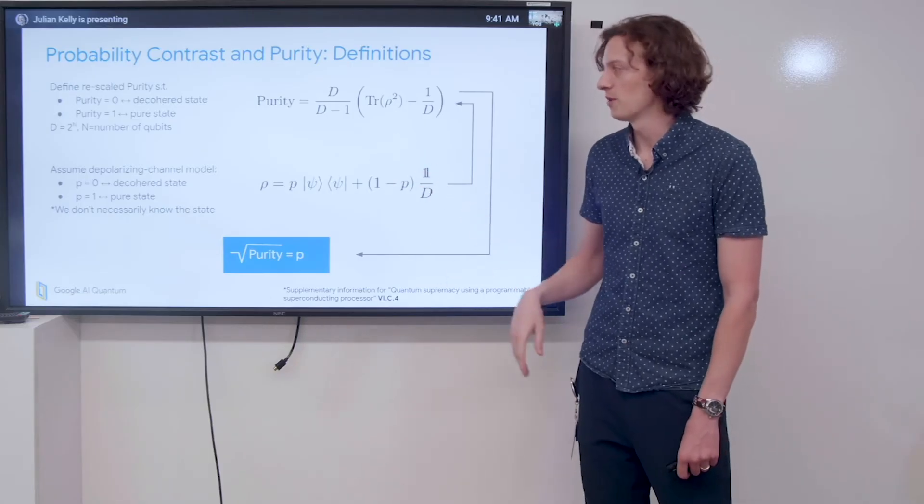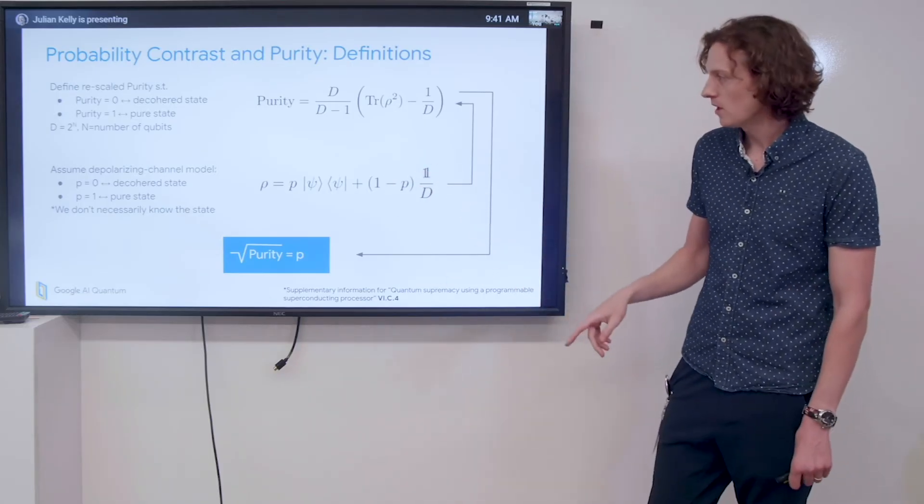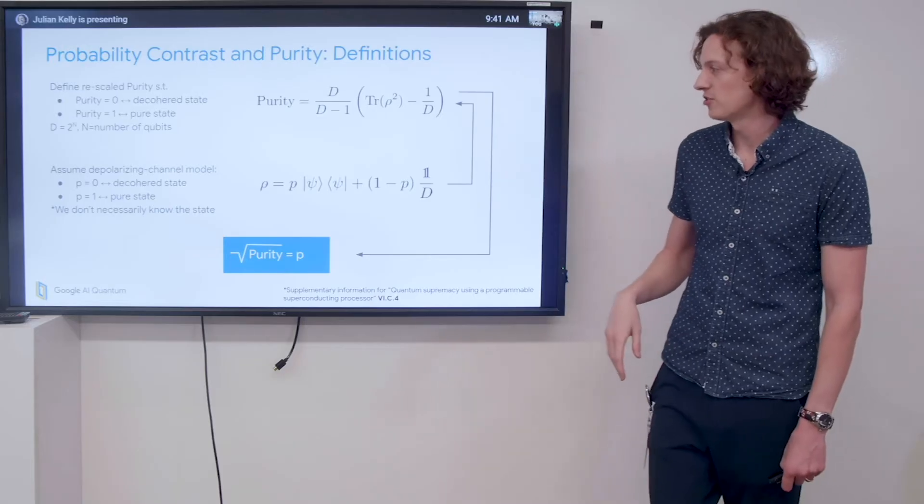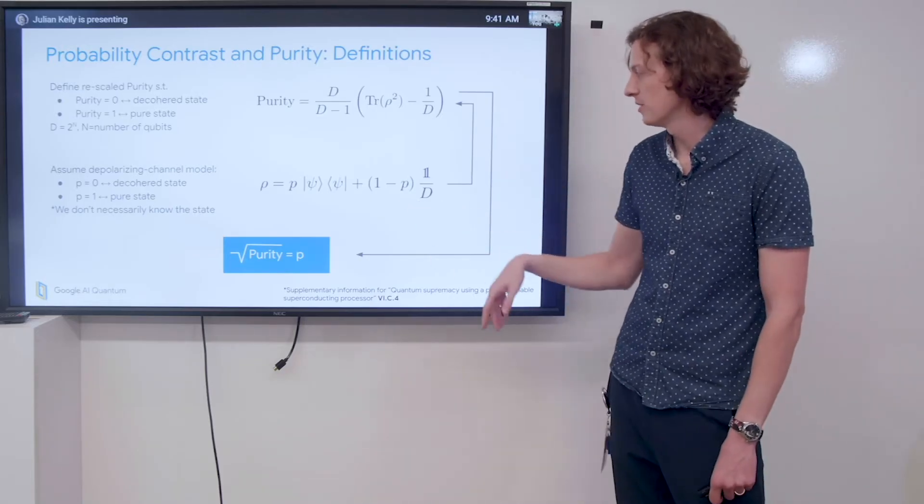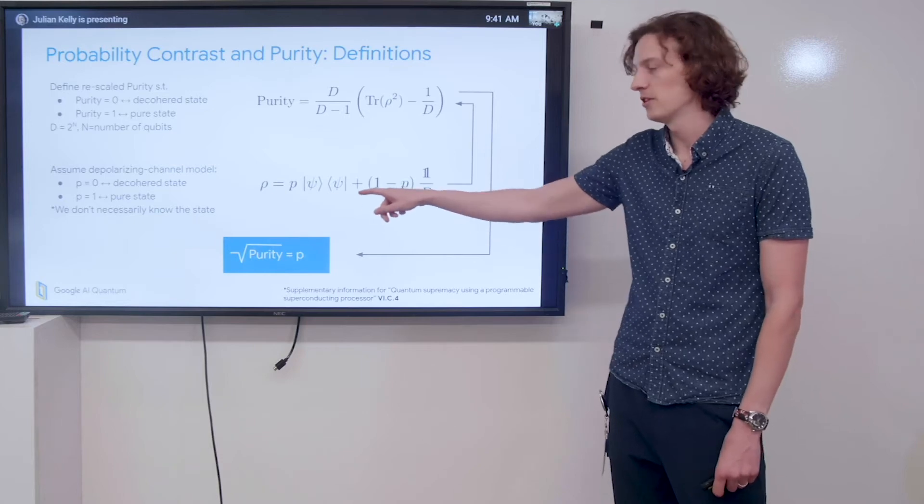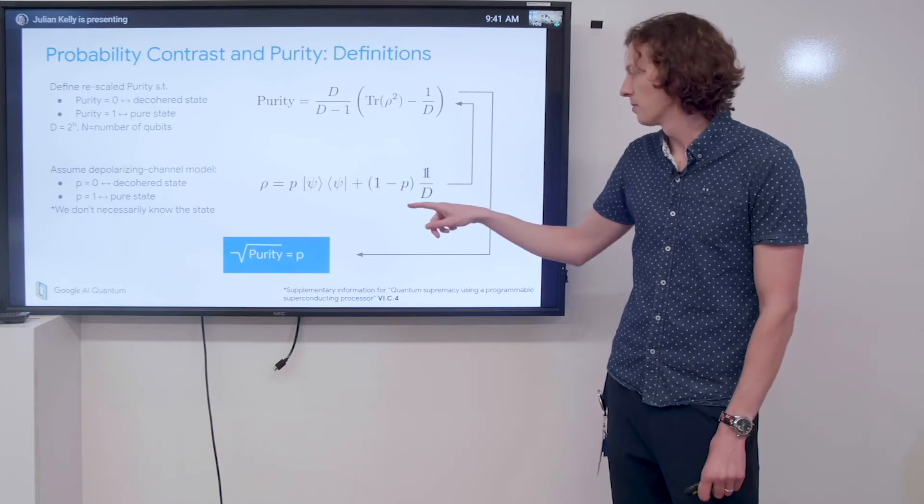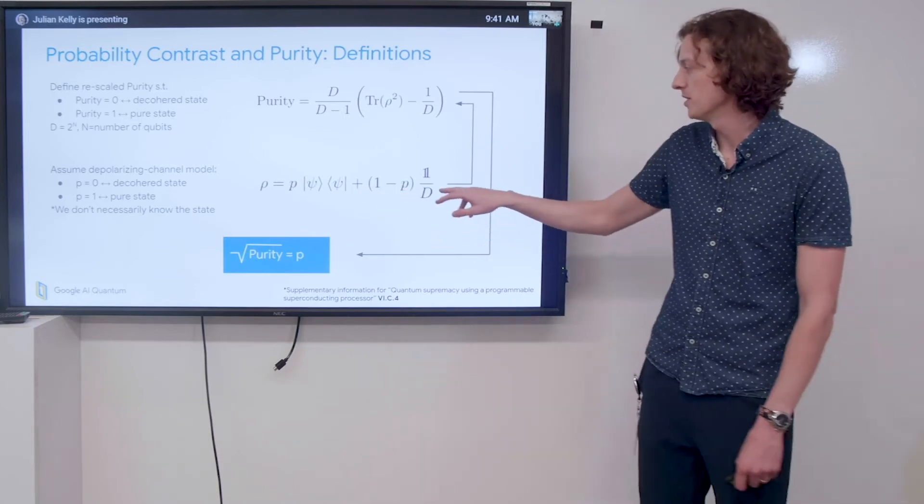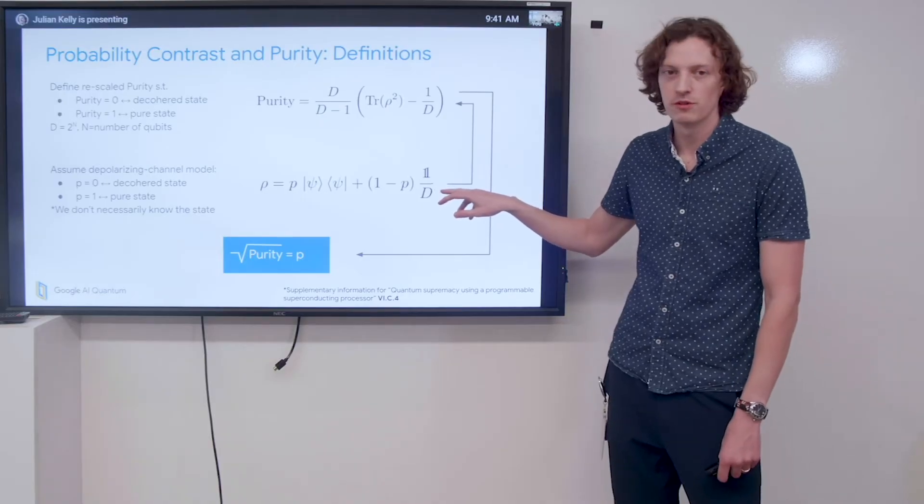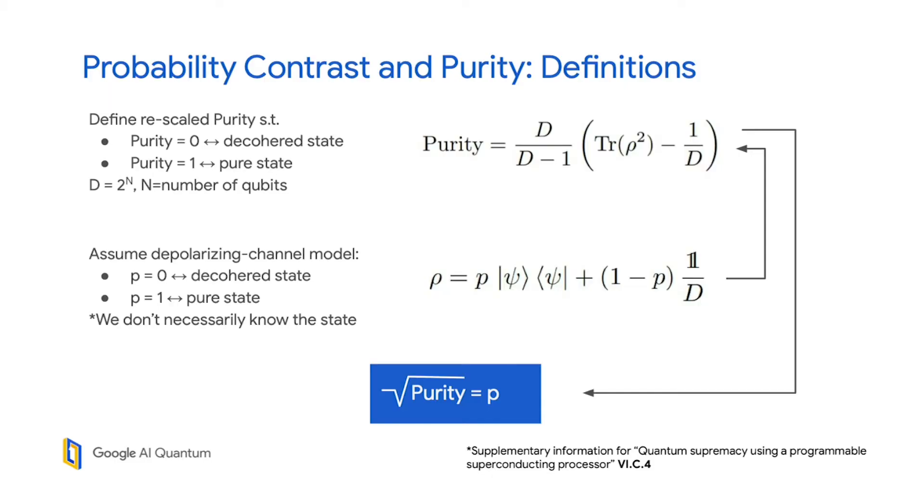We then assume a depolarizing channel model, which is to say that the density matrix is some polarization parameter P times a completely pure state psi, plus 1 minus P times the completely decohered uniform distribution, 1 over D. Then if you plug these into each other, we can see that these parameters directly relate—the polarization parameter is directly related to the square root of purity, which kind of makes sense because the polarization is telling us how much we're in a pure state versus how much we're in a decohered state.